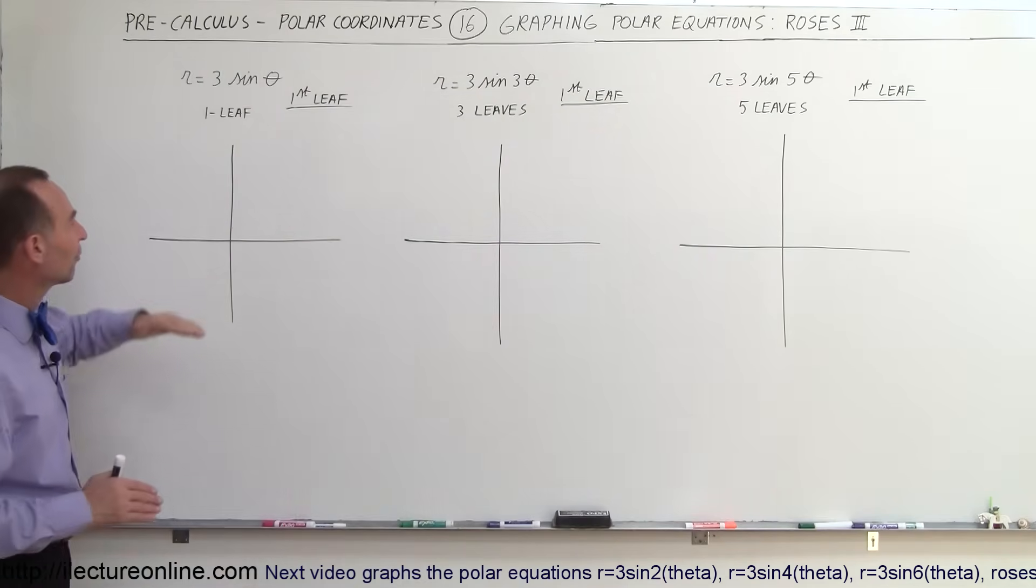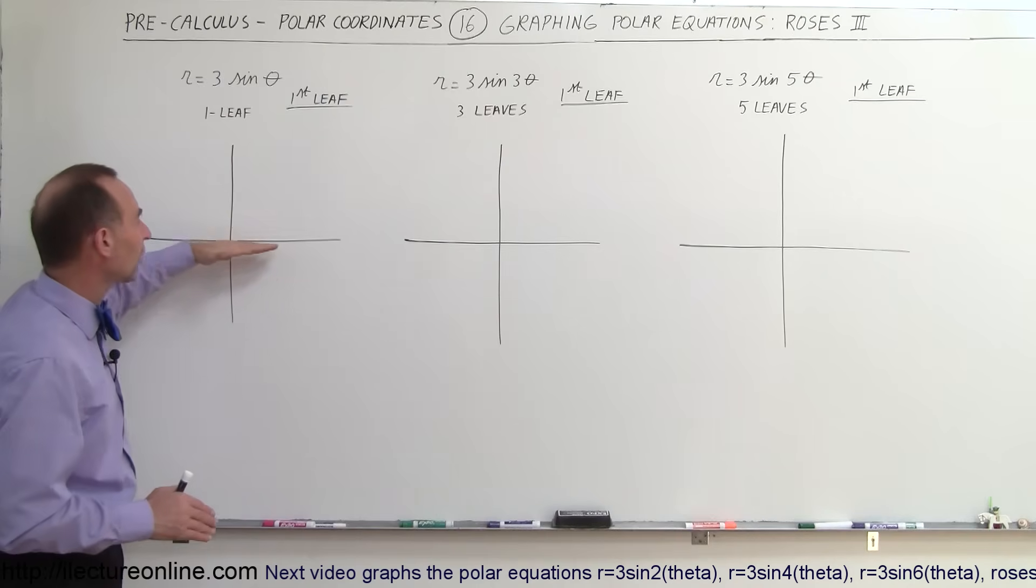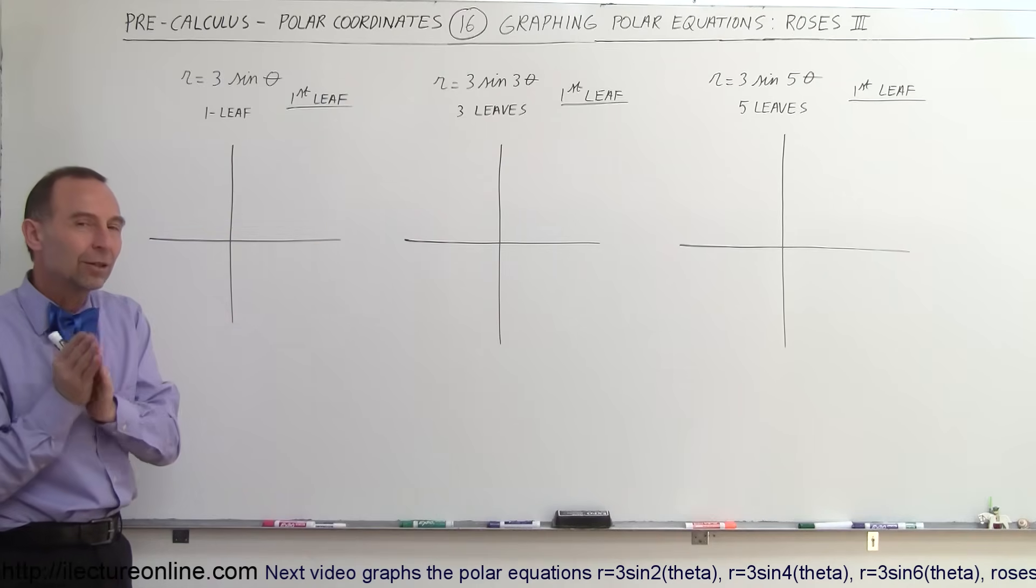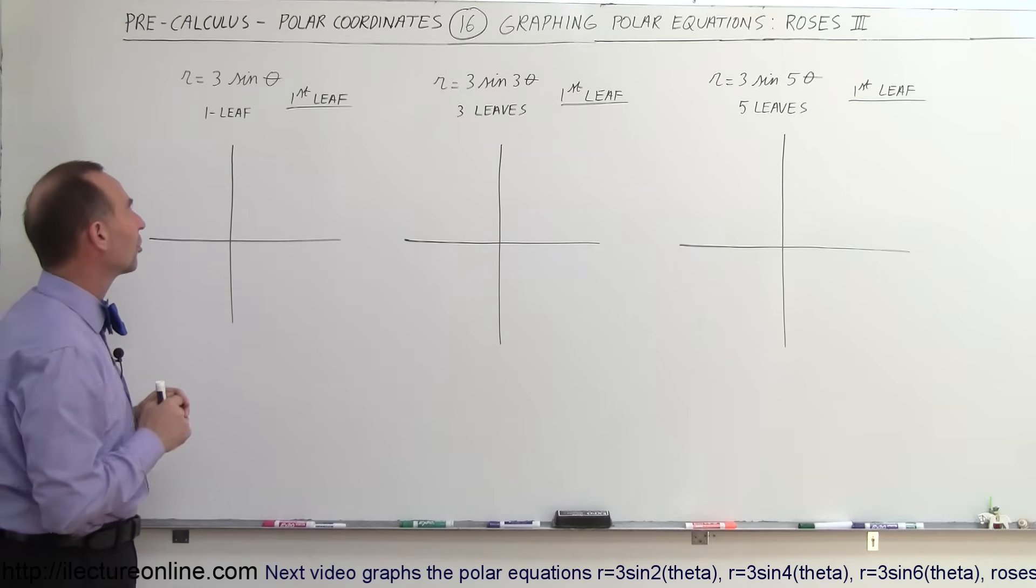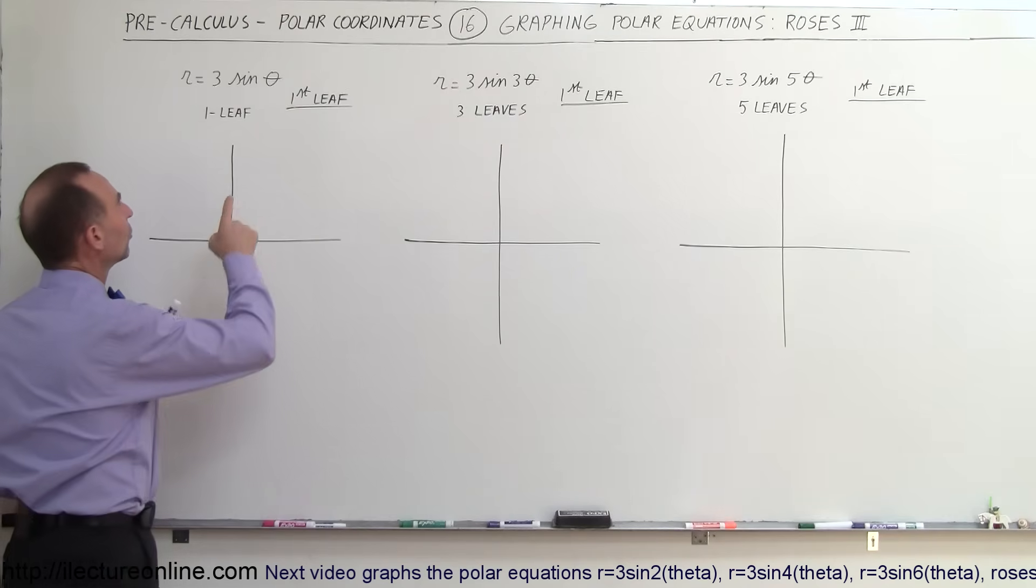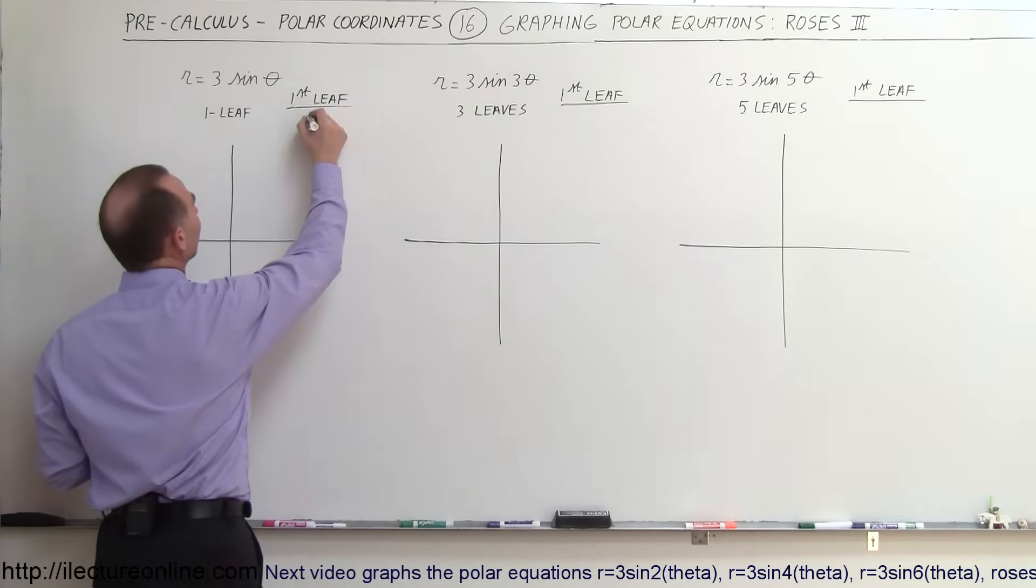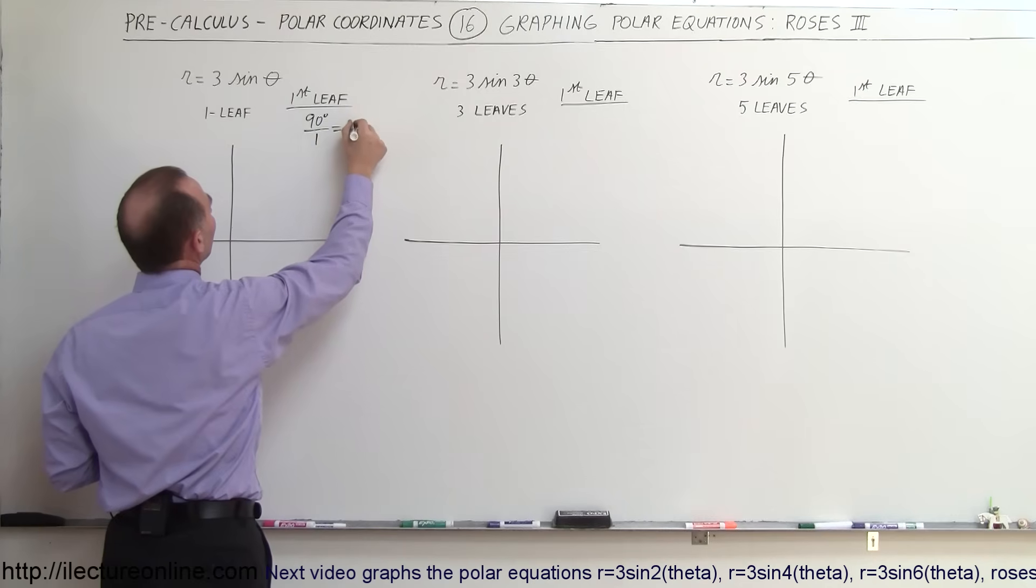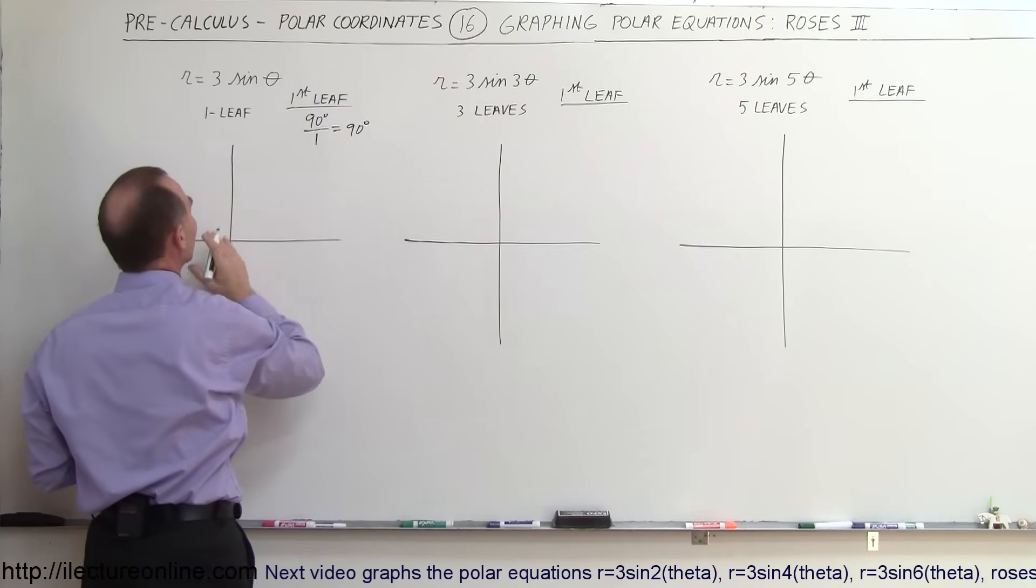Also, with the cosine, the first leaf always starts on the horizontal positive x-axis. But in the sine, it'll depend upon what the equation looks like. In this case, the way you find the first leaf is you take 90 degrees and divide by the number in front of the angle, which is 1, which means that the first leaf starts at an angle of 90 degrees, which is in this direction right here.